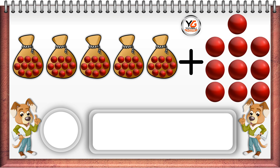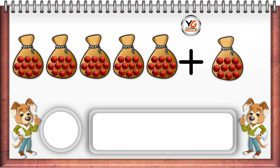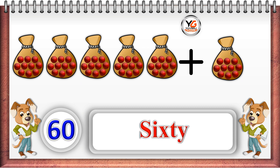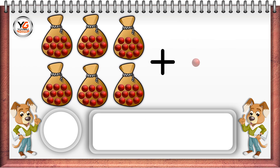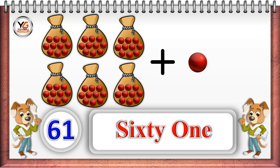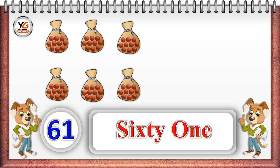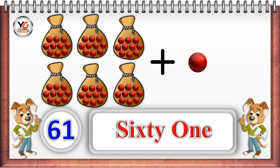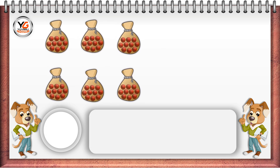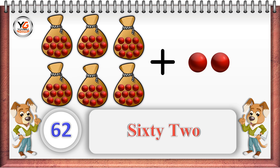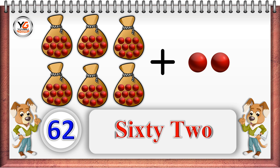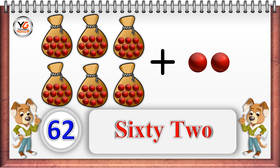Ten units means one 10: 6 tenths: 60. Six tenths and one unit: 61. Six tenths and two units: 62. Six tenths and three units: 63.